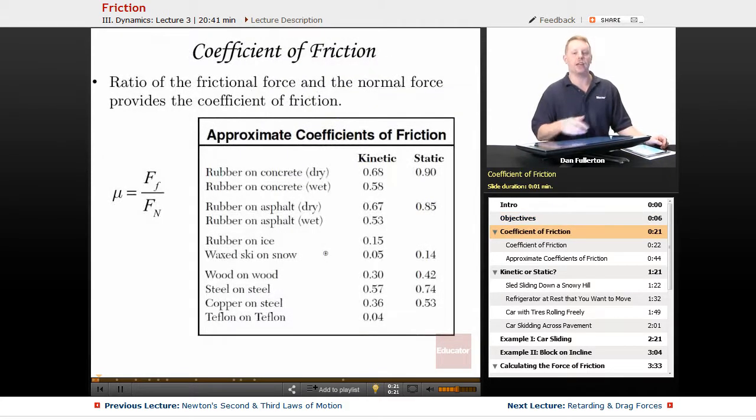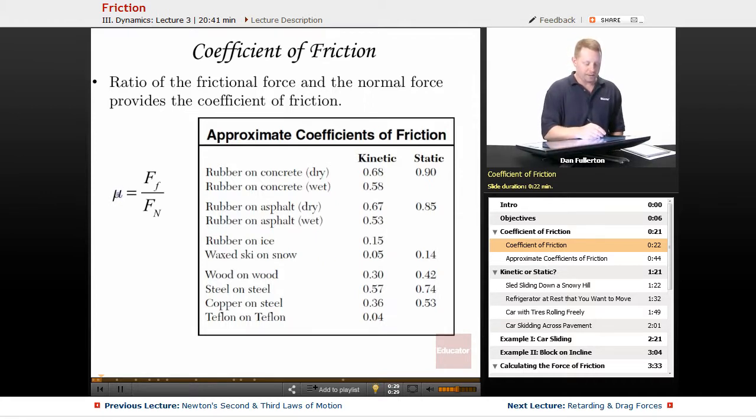So let's start off by talking about the coefficient of friction. The ratio of the frictional force to the normal force provides the coefficient of friction. Mu is the coefficient of friction, it's unitless, and it's the force of friction divided by the normal force.